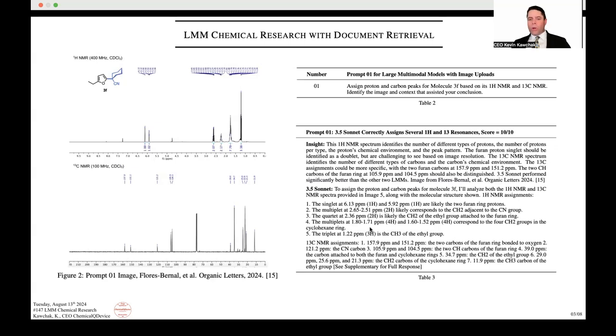The multiplets at 1.8 to 1.71 and 1.6 to 1.52 correspond to the four CH2s in the cyclohexane ring, which is correct. And then the one that should be the furthest off is the CH3, this methyl at 1.22, which is most upfield at 1.22. It did a really good job with that. I kept the prompt short. I didn't get into excruciating detail just to make sure that this would run along with other prompts too.